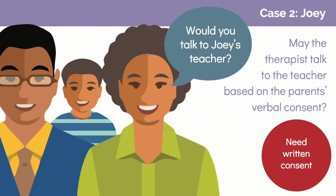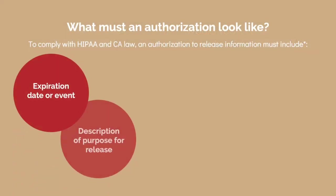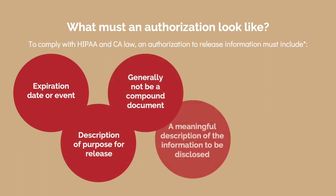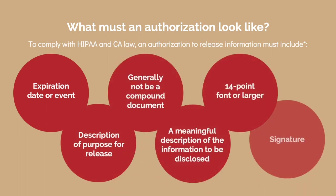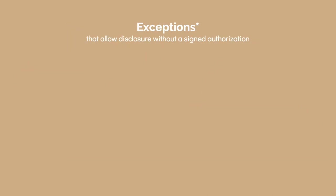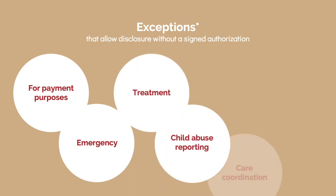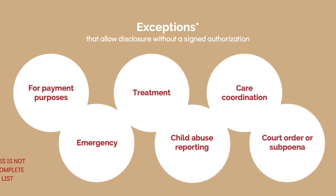Joey's parents would sign the release form. HIPAA requires certain elements and advisements in an authorization form, and California law includes some additional requirements. For example, in California, an authorization form must be in 14-point font. There are some exceptions in HIPAA that allow a health care provider to share information even without a written authorization, including sharing information for payment purposes, child abuse reporting, and when there is a court order.